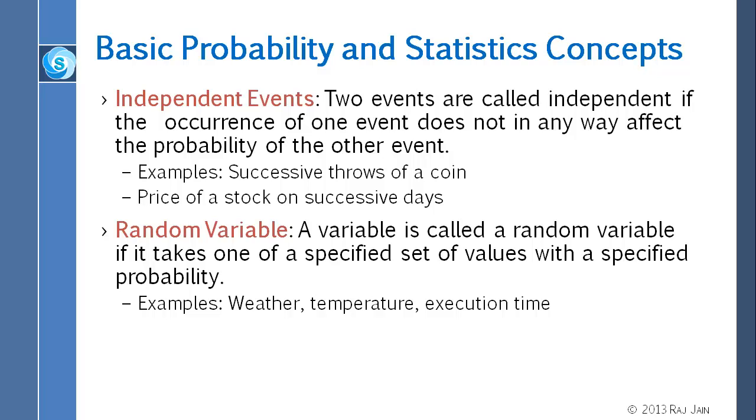Random variable. A variable is called random variable if it takes one of a specified set of values with a specified probability. So it can take many values, and for each value, we can specify a probability. For example, temperature. What is the temperature right now? That's probably a random number, because it depends upon where you measure it. You measure it 100 places. Some places it will be 43, some places 44, some places 45. So we can specify a distribution that the values are between 43 and 45. Temperature, execution time. These are all random quantities.